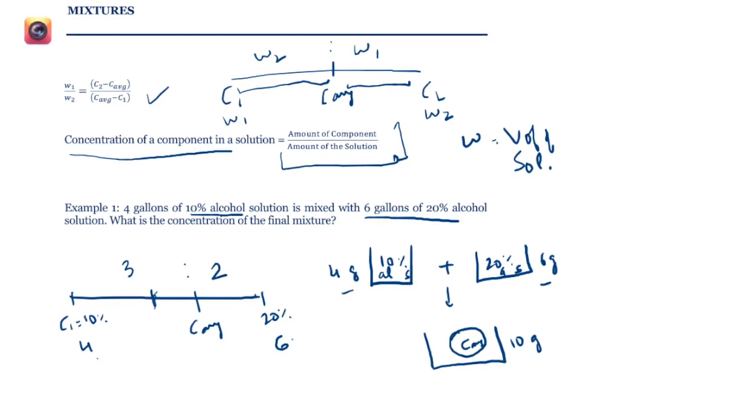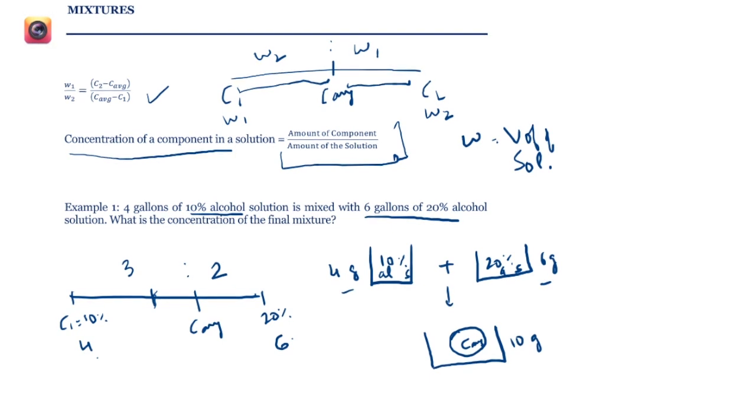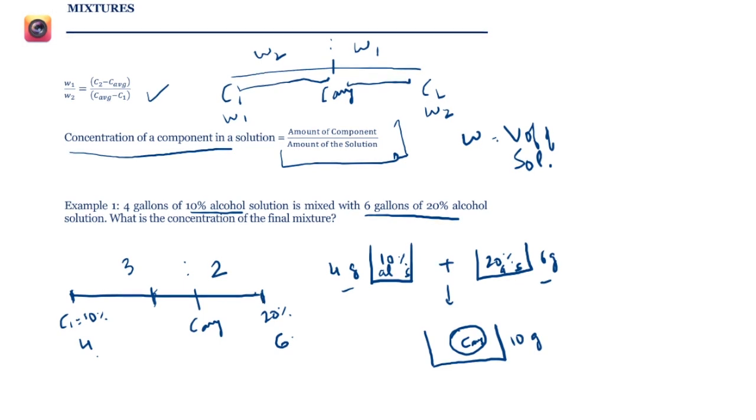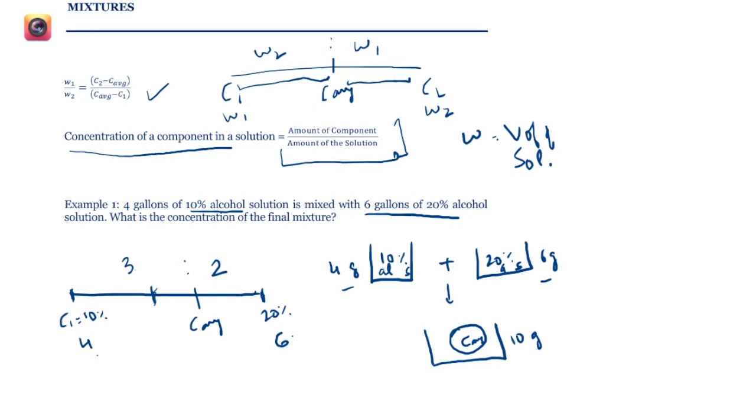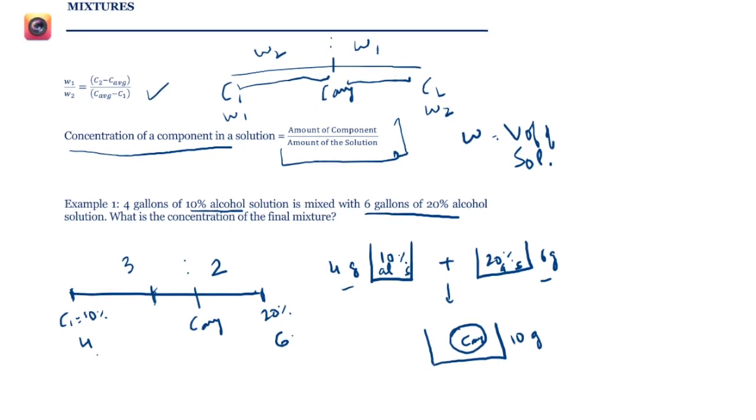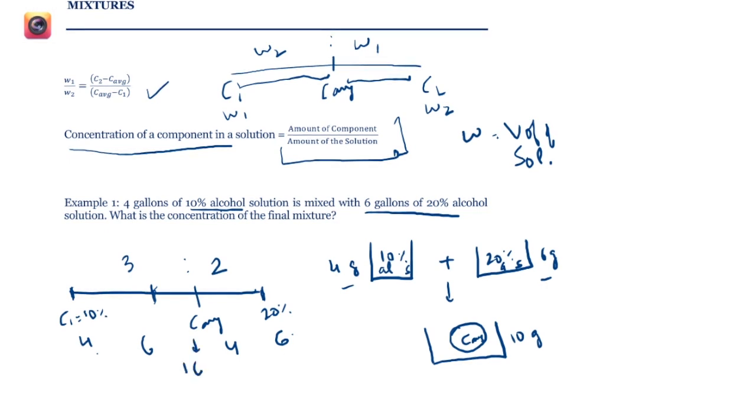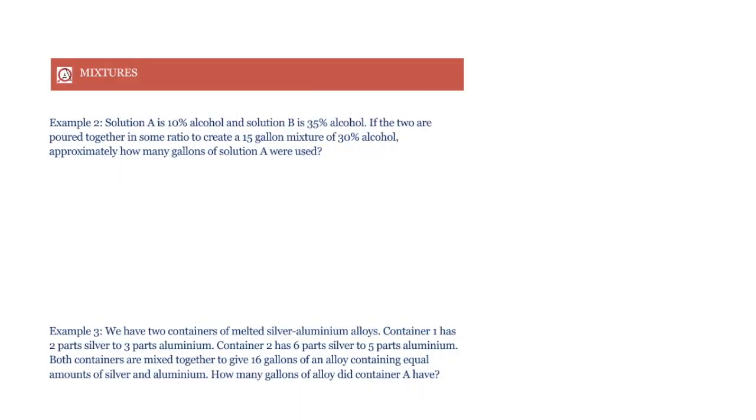The reverse of the ratio of the weights. Then since this is 10% and this is 20%, there is a distance of 10 in between them. And if we split this difference of 10 in the ratio 3 is to 2, what are we going to get? We'll get 6 and 4. That means our C average is 6 more than 10%, which means our C average is 16%. Or it's another way of saying that our C average is 4 less than 20%, which means our C average is 16%.